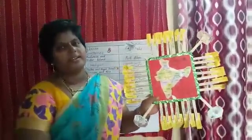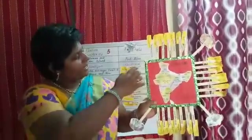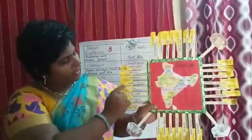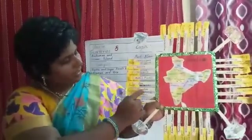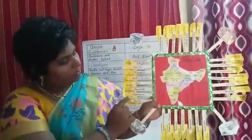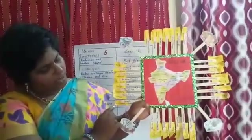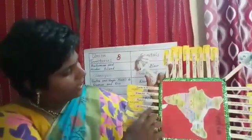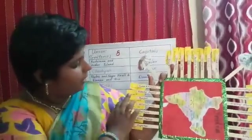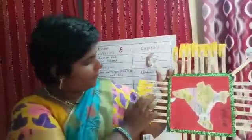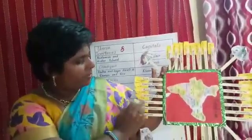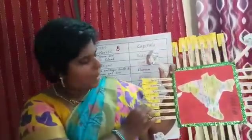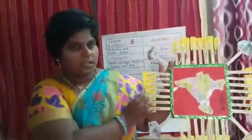Let's look at our states and their capitals. Chhattisgarh — Raipur. Odisha — Bhubaneswar. Telangana — Hyderabad. Andhra Pradesh — Amaravati. Goa — Panaji. Karnataka — Bengaluru. Tamil Nadu — Chennai. Kerala — Thiruvananthapuram. Himachal Pradesh — Shimla. Punjab — Chandigarh. Uttarakhand — Dehradun. Haryana — Chandigarh. We have Chandigarh as the capital for both Haryana and Punjab, and it is also a union territory.